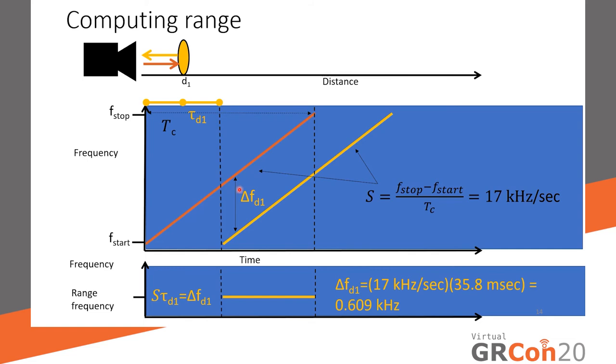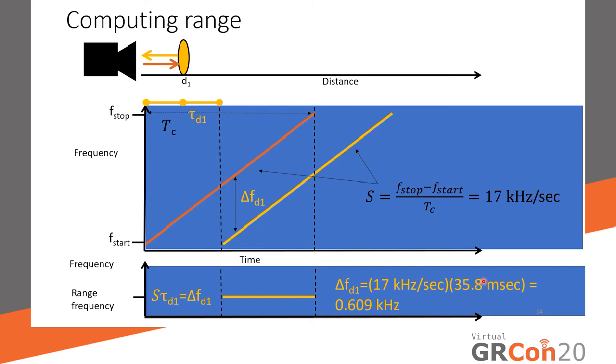To compute the range from this data, we have our audio chirp with a 17 kilohertz per second slope, and then our received chirp. What we should see if we use the formula that we talked about earlier is a 0.6 kilohertz waveform for the range frequency that would correspond with our round trip distance of 12.2 meters. For this next demo with GNU Radio, we take that sound data that both the transmitted chirp and then the received data, and we will do the mixing to be able to determine the range. We will see that at the 0.6 kilohertz there is a waveform, but as you can see with real data, there's a lot more complexities.